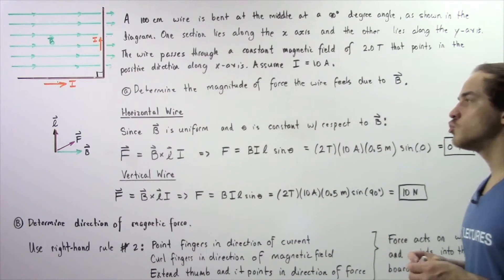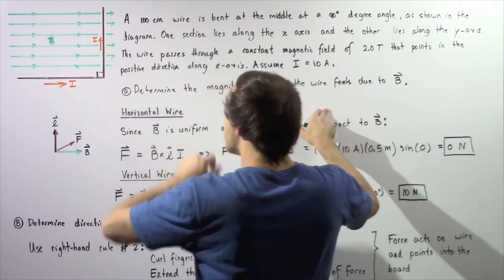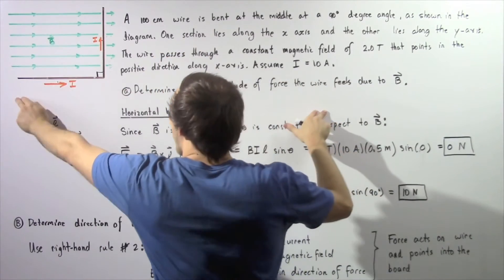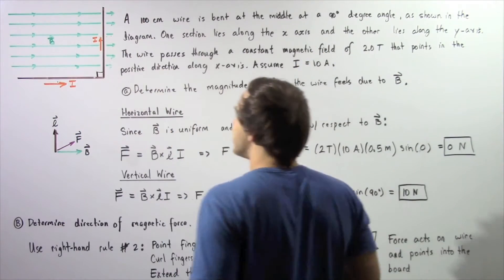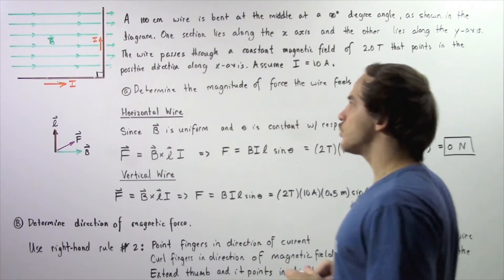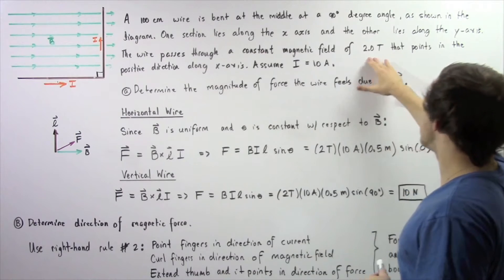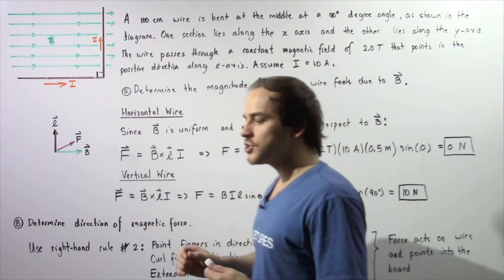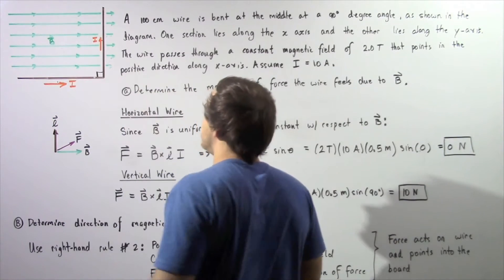Suppose a 100 centimeter wire is bent at the middle at a 90 degree angle as shown in the following diagram. One section of the wire lies along the x-axis and the other section lies along the y-axis, with a 90 degree angle between them. The wire passes through a uniform magnetic field of two Teslas pointing in the positive x-axis direction, as shown by the green magnetic field lines.